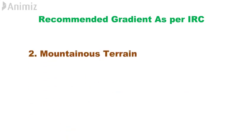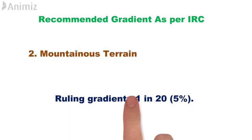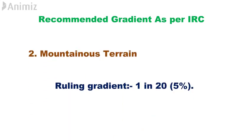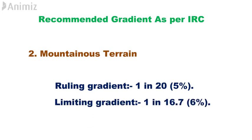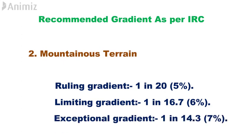2. For Mountainous Terrain: Ruling gradient is 1 in 20, i.e., 5%. Limiting gradient is 1 in 16.7, i.e., 6%. Exceptional gradient is 1 in 14.3, i.e., 7%.